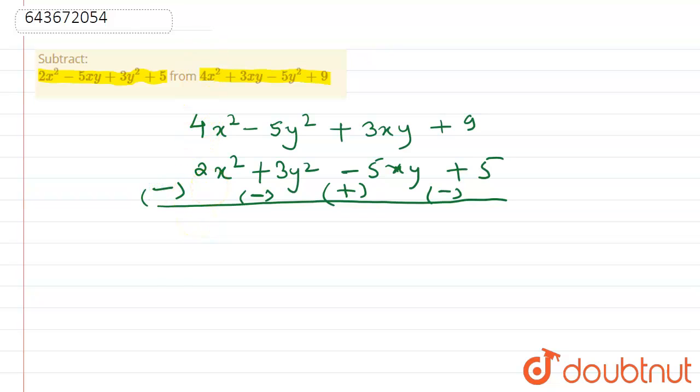So here 4 minus 2, it is 2x². Minus minus will get here plus, and sign is of bigger number that is minus 5. Minus minus plus, that is 5 plus 3, 8y². Plus 5, 6, 7, 8xy.